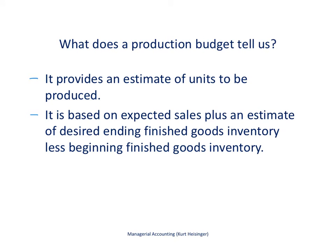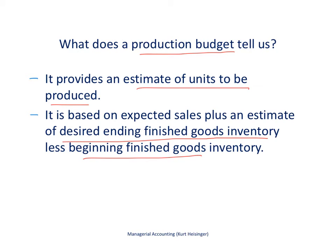Next we're going to look at a production budget and how to put one together. Now that we have the sales budget, we have to figure out how much to produce. The production budget is not going to be the same as the sales budget, because we would expect to have some desired ending finished goods inventory. We factor in our desired ending finished goods inventory and then subtract the beginning finished goods inventory for that same period.